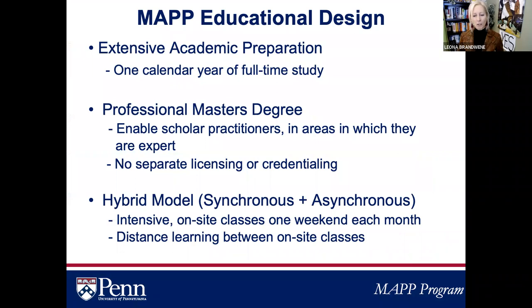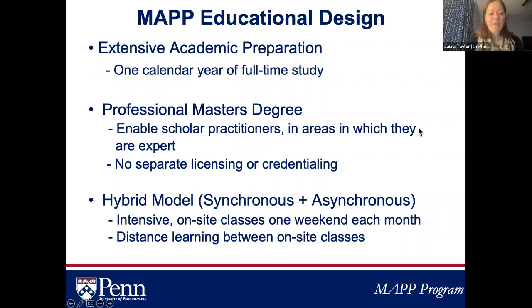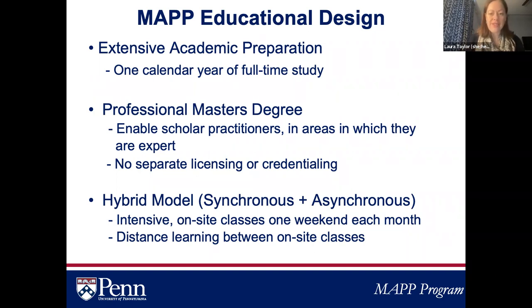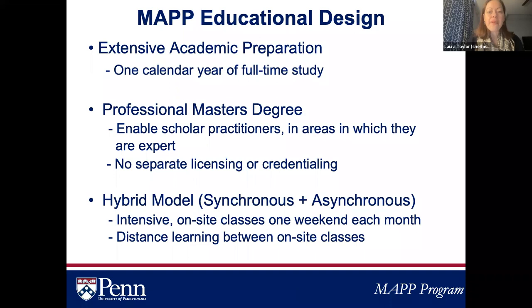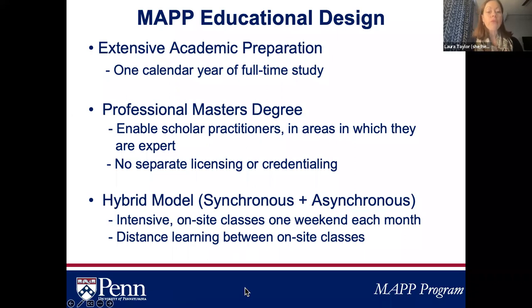Now let's dive into the nuts and bolts of how the program is structured. MAP is intended to provide extensive academic preparation, looking at the theories and empirical foundations of positive psychology while deeply considering ethical application. MAP is one calendar year of full-time study that begins each fall. It is a professional master's degree that enables scholarly practitioners in areas in which they are expert. There is no licensure or credentialing, as the populations students work with are largely non-clinical.